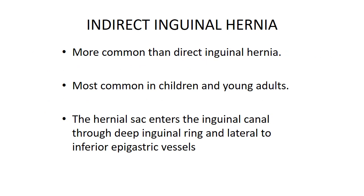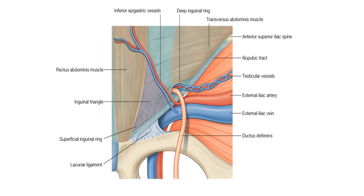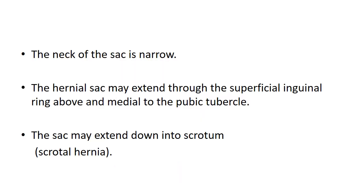Indirect inguinal hernia is more common than direct inguinal hernia and most common in children and young adults. The hernial sac enters the inguinal canal through the deep inguinal ring and is lateral to the inferior epigastric vessels. The sac is narrow and may extend through the superficial inguinal ring above and medial to the pubic tubercle, or extend down into the scrotum — a scrotal hernia.